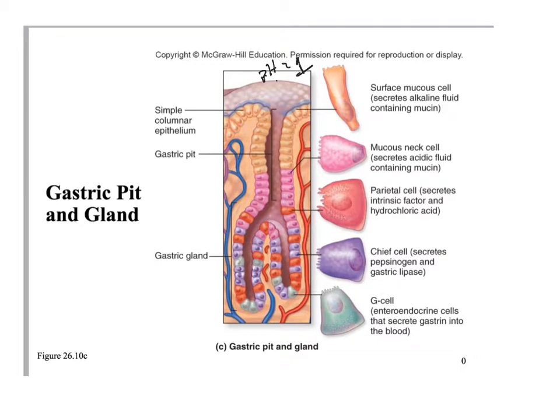Each of those cells — parietal cells, chief cells, and enteroendocrine cells — has a distinct function. When a bolus of food is present in the stomach, these cells begin secreting their different factors. Parietal cells produce hydrochloric acid, bringing pH down close to 1. Chief cells produce two enzymes: pepsinogen and gastric lipase. Pepsinogen is an inactive form that becomes activated in the presence of HCl to become pepsin.